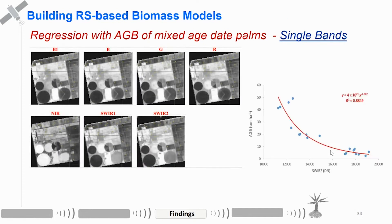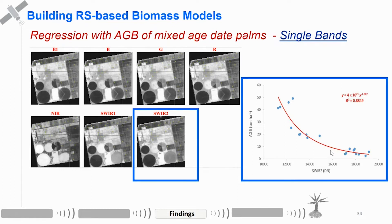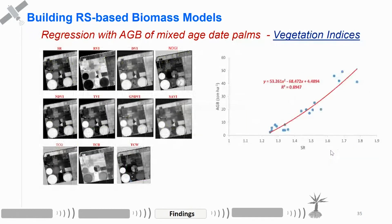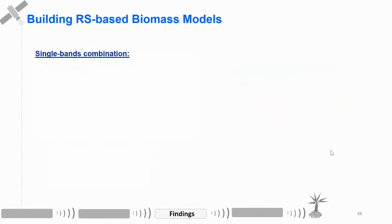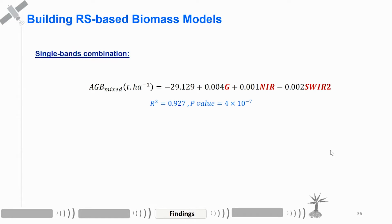For single bands, we ran linear regression using equations like power or polynomial. We found that short-wave infrared band 2 is the best predictor for above-ground biomass of date palm. For vegetation indices, we found that simple ratio works better. To further improve the R-squared, we ran stepwise regression with backward elimination, and found that the combination of green, near-infrared, and short-wave infrared gives the best R-squared.